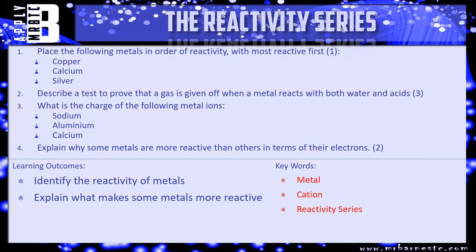Let's have a look at a few questions then. Question one: place the following metals in order of reactivity — which is the most reactive? Put that first, then the second most, then the least. Question two: describe a test to prove that a gas is given off when the metal reacts with both water and acids. You should know the name of the gas given off — one mark for that, and then two marks for what is the test for it.